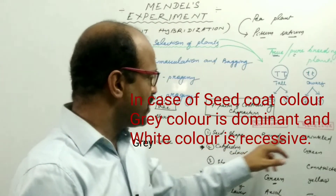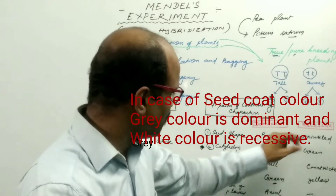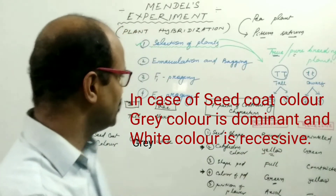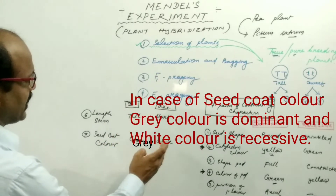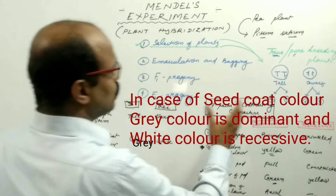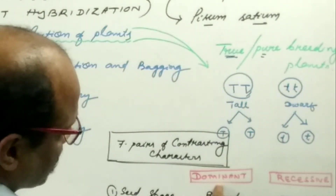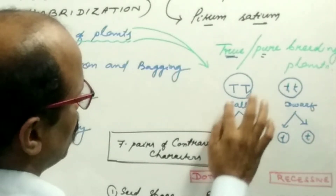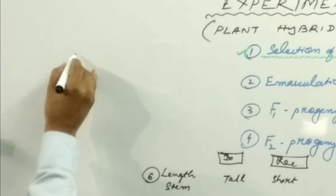To recap the seven pairs: seed shape — round dominant, wrinkled recessive; cotyledon color — yellow dominant, green recessive; shape of pod — full dominant, constricted recessive; color of pod — green dominant, yellow recessive; position of flower — axial dominant, terminal recessive; length of stem — tall dominant, short recessive; and seed coat color — green dominant, white recessive. So we have come across the term homozygous, with capital TT and small tt, and also dominant and recessive.